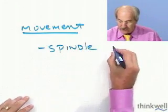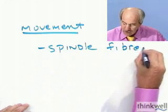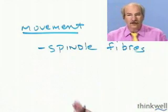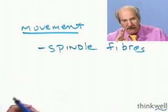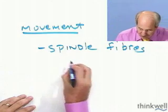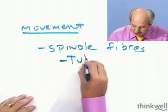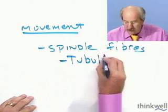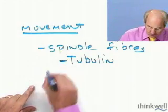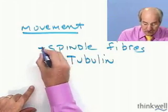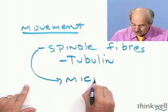You know about spindle fibers a little bit. You may want to link back and read about tubulin, because spindle fibers are made out of tubulin. Tubulin is a protein that makes up microtubules. So spindle fibers, therefore, are microtubules.